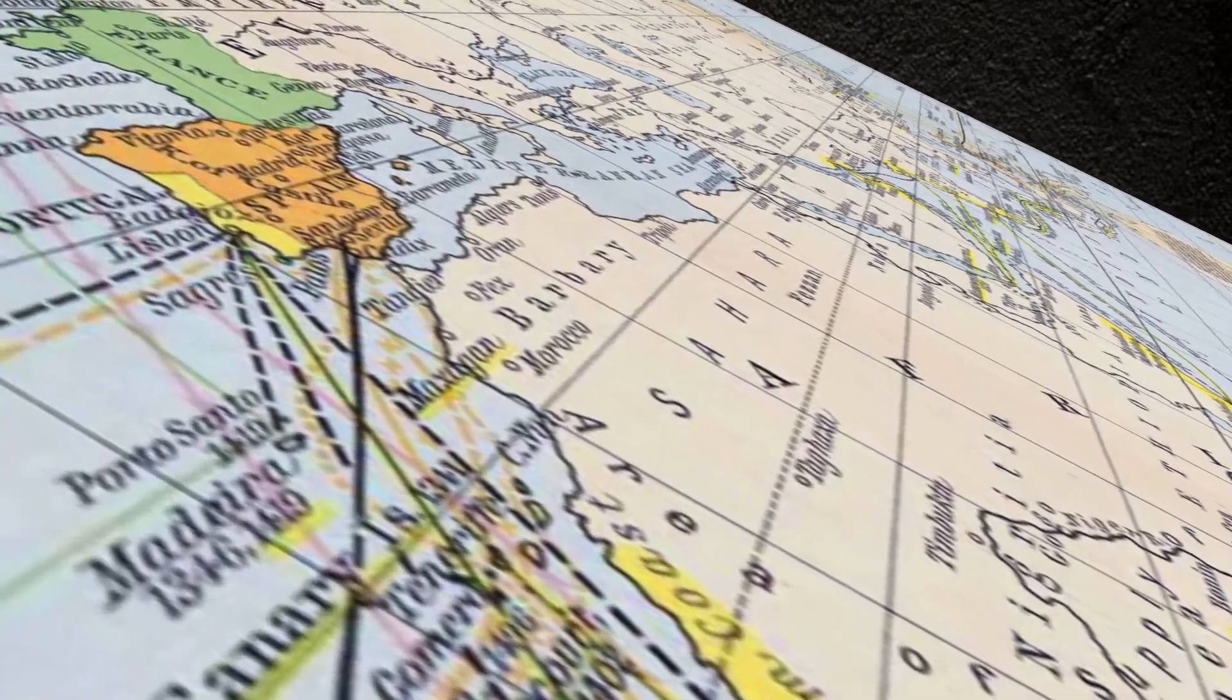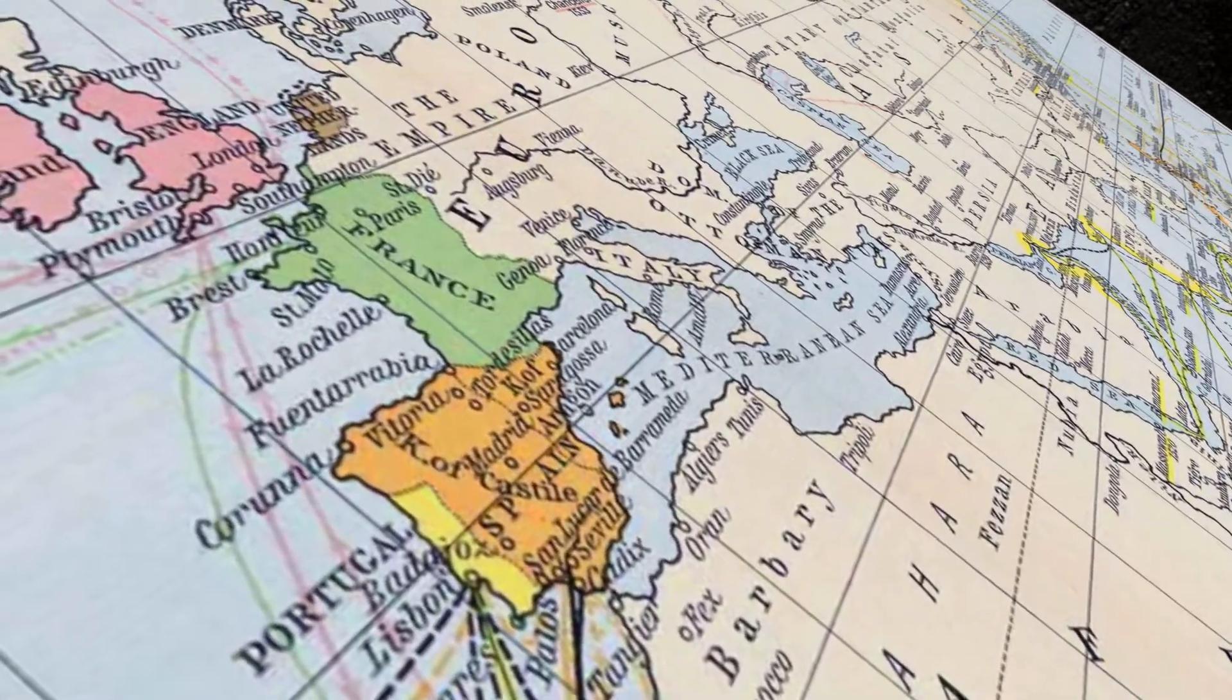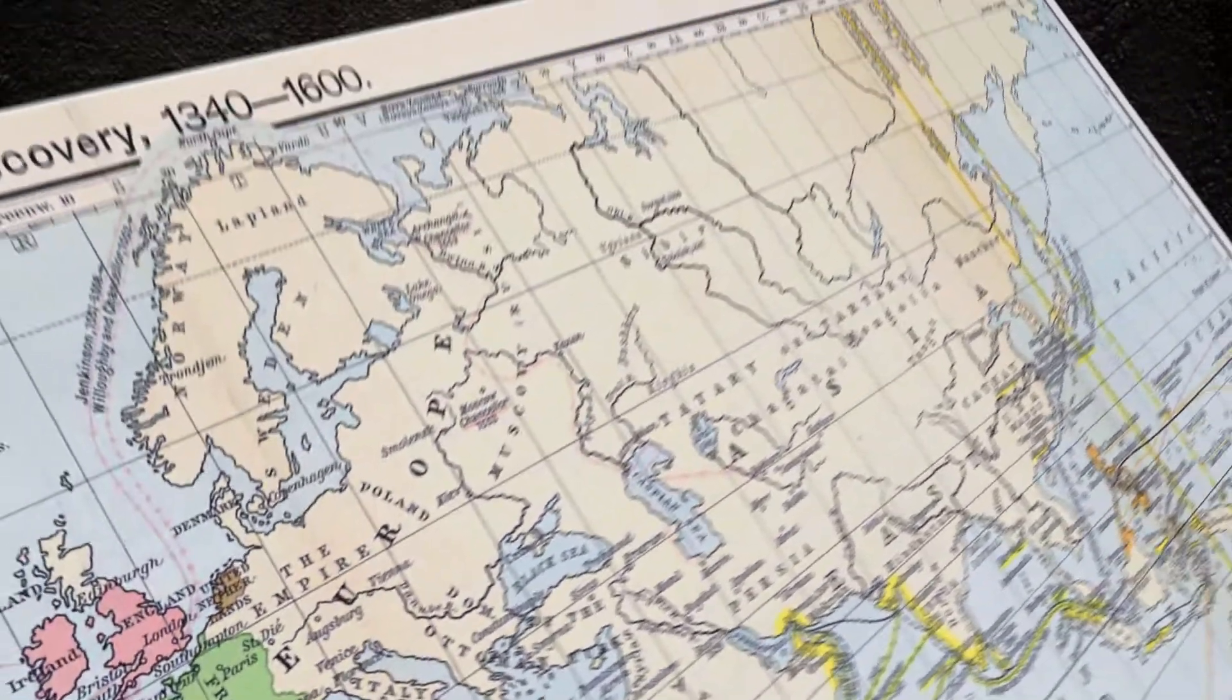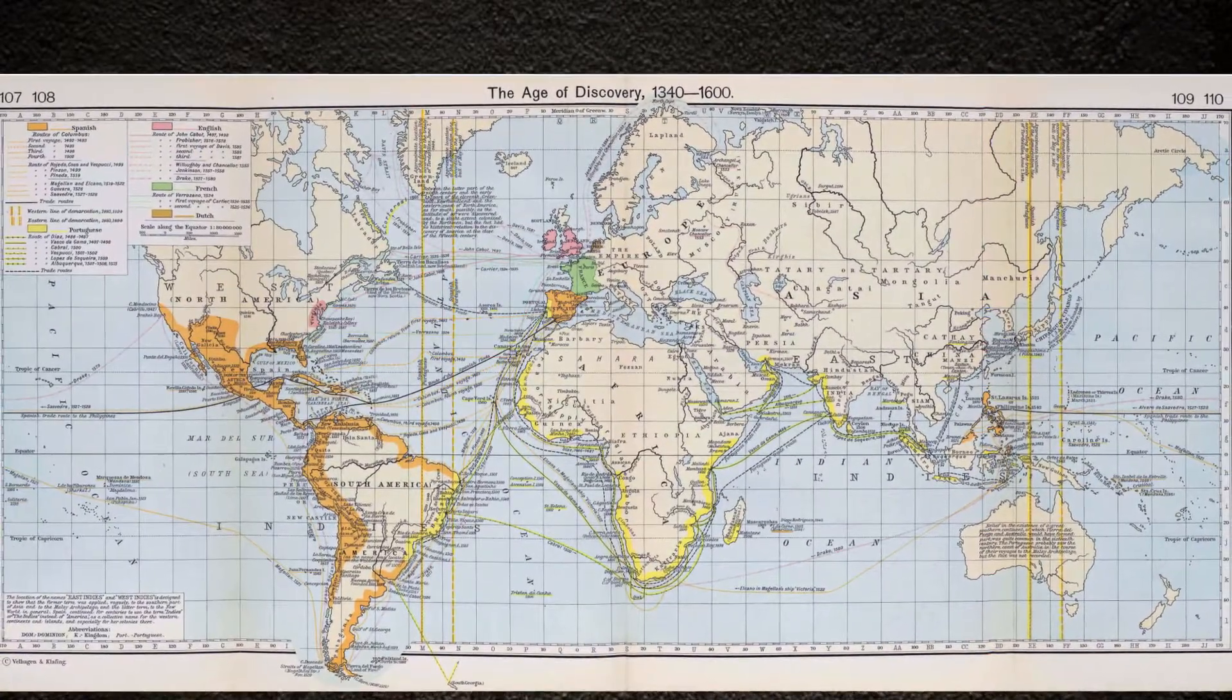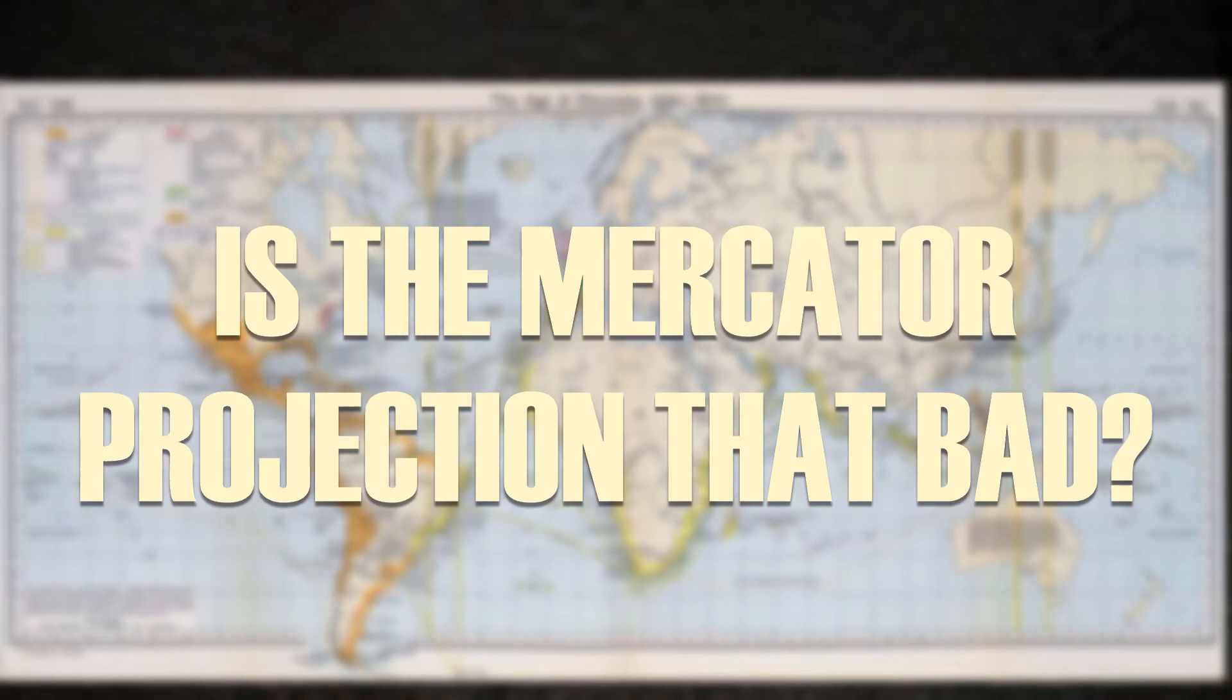I mean, those people aren't wrong. In fact, this kind of map has a lot of problems. Okay, in some circumstances it might be tricky, but in reality, is the Mercator projection that bad?